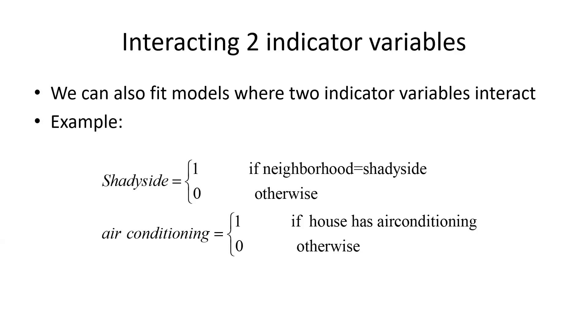The example is a housing dataset in Pittsburgh where we are regressing the price of houses on various variables. I have selected two indicator variables here to explain the concept. Shadyside is an expensive neighborhood in Pittsburgh, and there's an indicator for Shadyside. Air conditioning, yes or no, is whether or not the house has air conditioning. That is not completely obvious in the old houses in Pittsburgh.